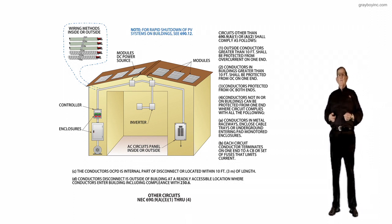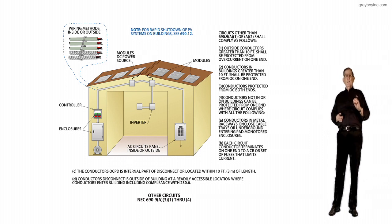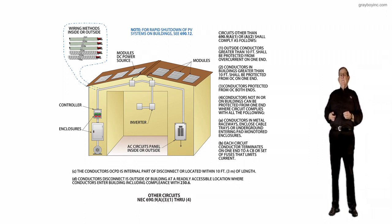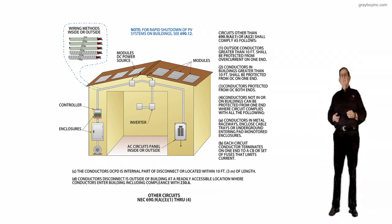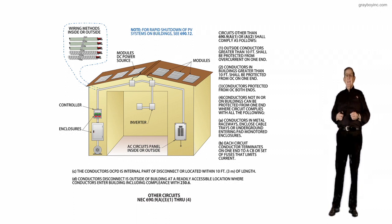So see 230.6 when you want to know when you're considered outside the building. Now we've given you as much information as possible concerning these new subdivisions and other circuits that have to comply with 690.9 A3 items 1 through 4.